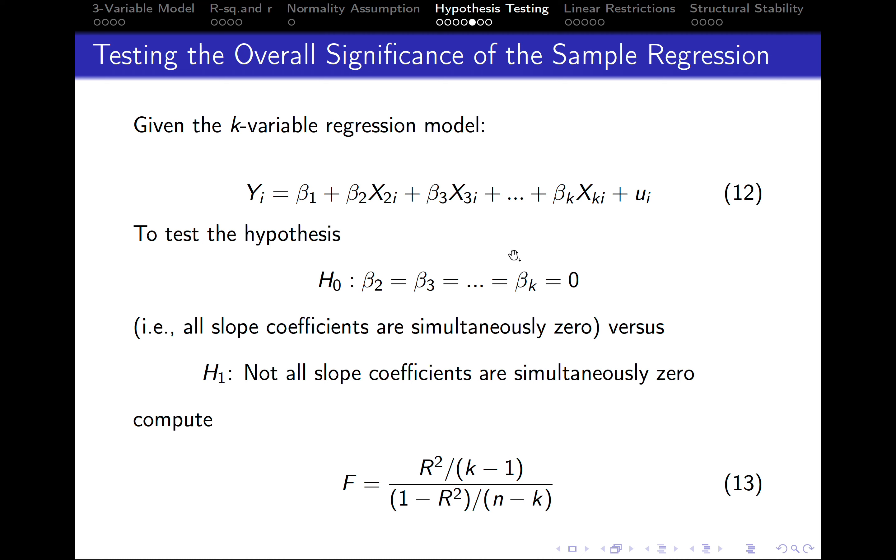So let's assume we've got the k-variable regression model, which means that there are k number of independent variables x2, x3, and all the way to xk.